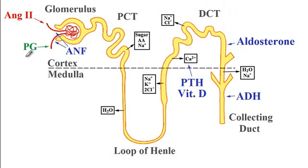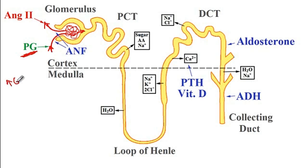First, prostaglandin acts on the afferent arteriole — this is where blood enters the glomeruli, gets filtered, and exits. Prostaglandin causes dilation of the afferent arteriole, and as a consequence there will be elevated glomerular filtration rate due to elevated renal plasma flow.